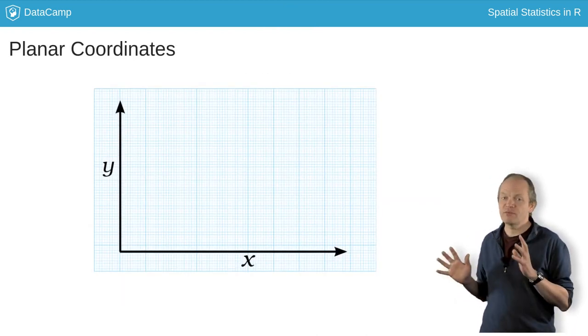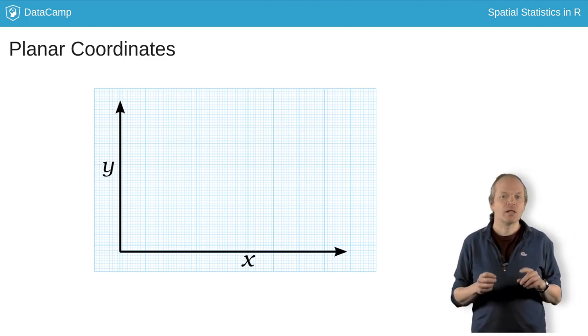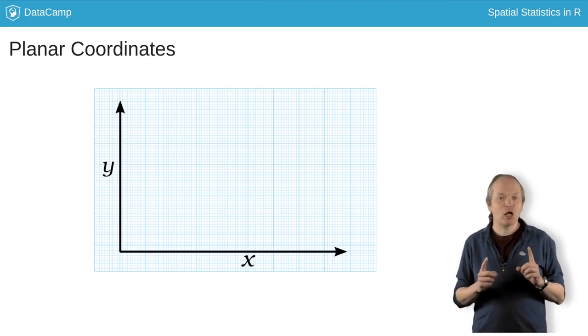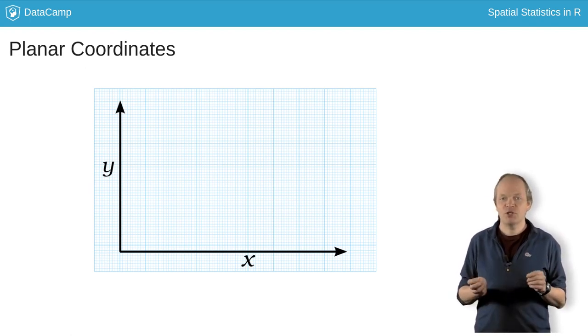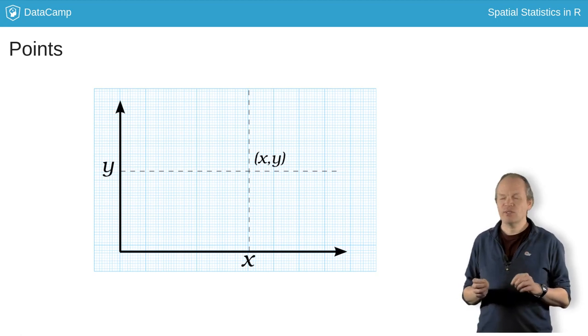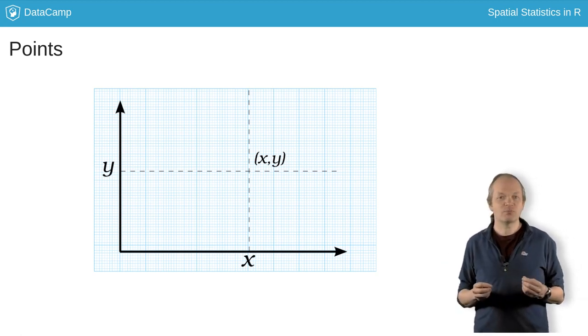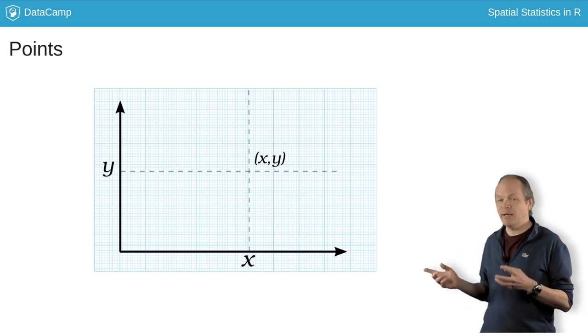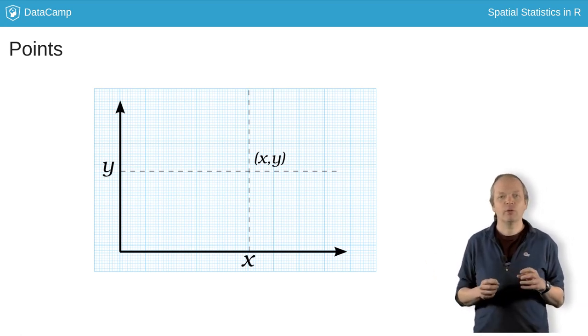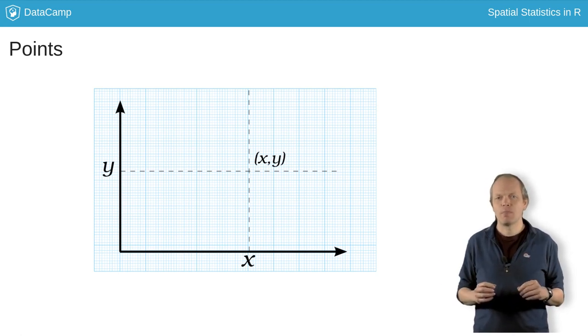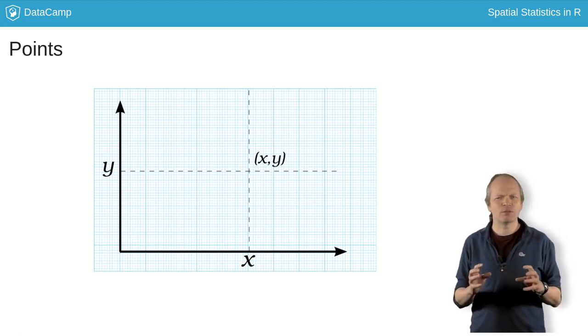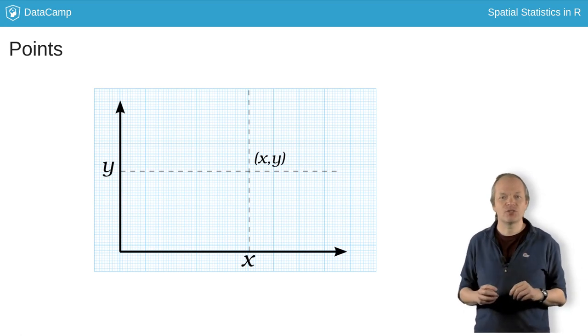These two dimensions will make a flat plane. Since SPATSTAT closely implements the published theory of point patterns, you'll need to learn some of the language. First, a point is any location in the 2D space. For data on a flat plane, this is specified by an x-y coordinate pair, where x and y can be anything between plus and minus infinity. There might not be anything happening at a point. It's just any location on the plane.